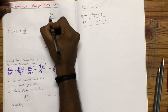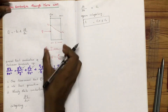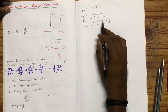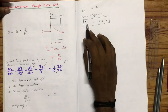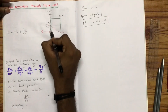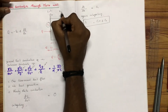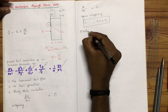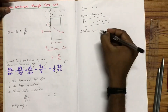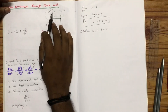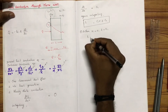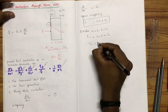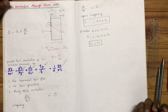We have two boundary conditions. The first boundary condition is: when x = 0, T = T1. Substituting into the equation T = C1·x + C2, we get T1 = C1·(0) + C2, so the value of C2 is equal to T1.